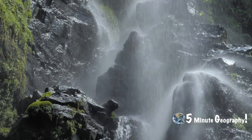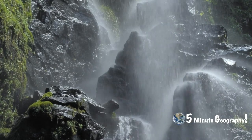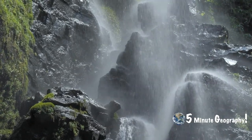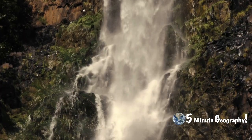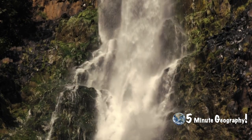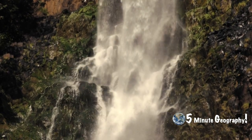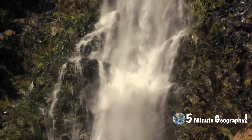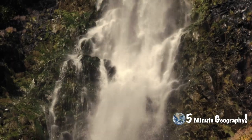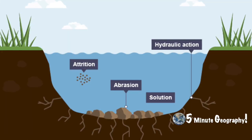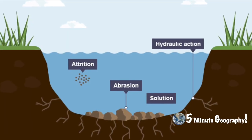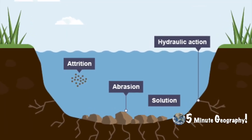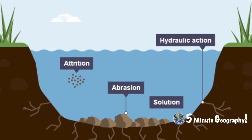Before delving into waterfalls, let's have a quick look at how rivers erode. Large, fast flowing rivers use their energy to erode the surface of the land. There are four main processes of erosion: hydraulic action, abrasion, attrition, and solution.